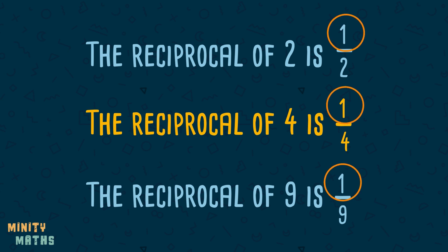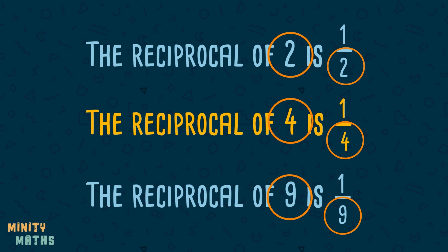So, we end up with a fraction of 1 over the number. To check these are correct, we can multiply the number by its reciprocal, and we should get an answer of 1.